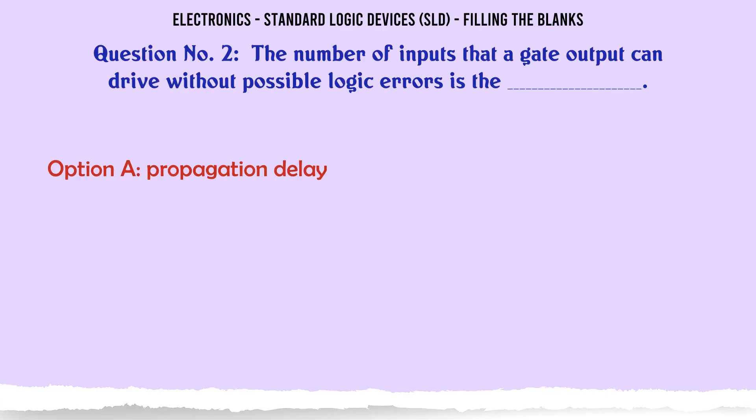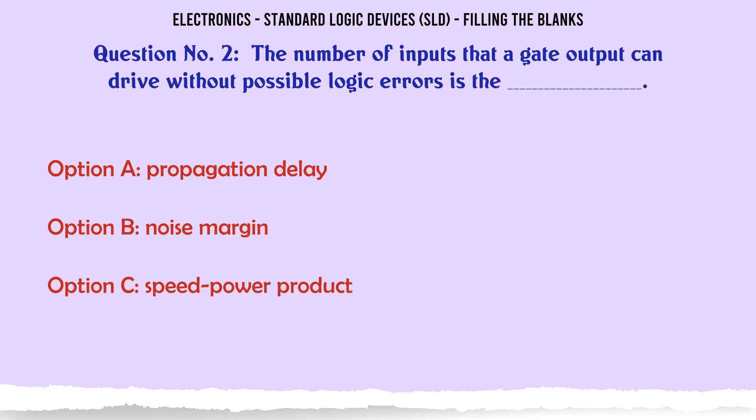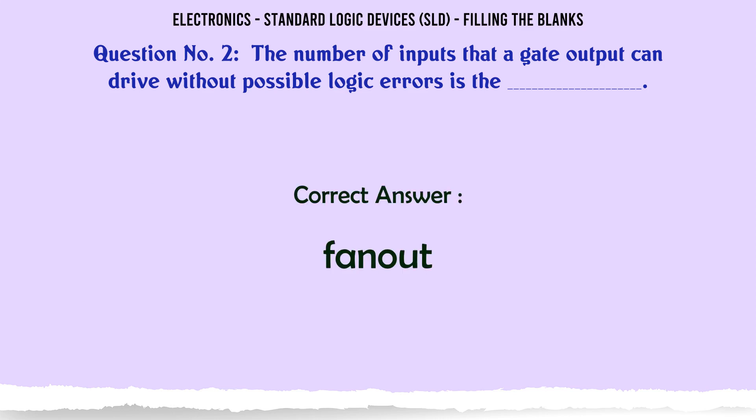The number of inputs that a gate output can drive without possible logic errors is the: A propagation delay, B noise margin, C speed power product, D fanout. The correct answer is fanout.